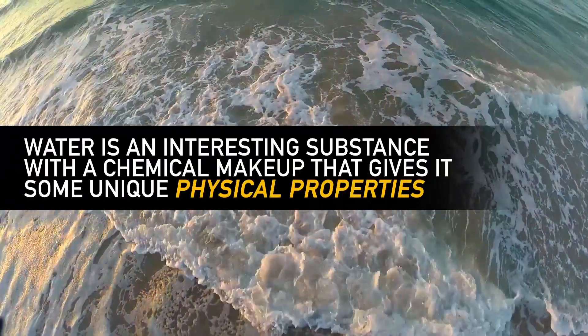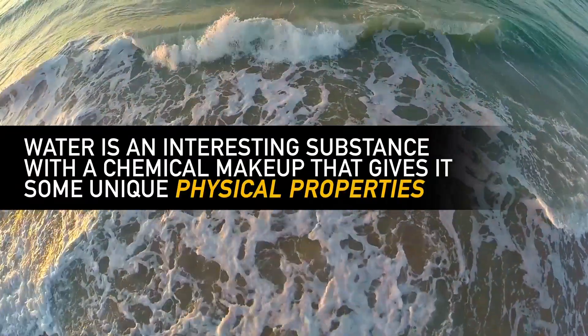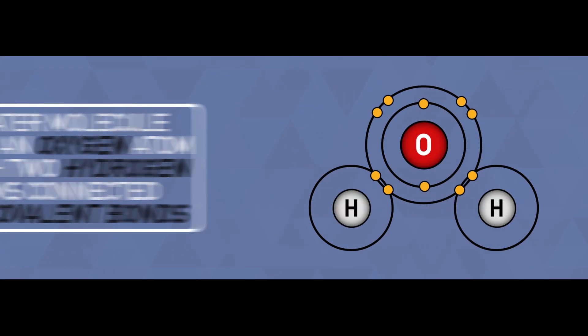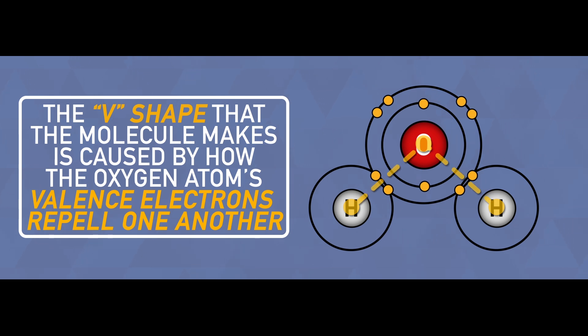Water is an interesting substance with a chemical makeup that gives it some unique physical properties. A water molecule has an oxygen atom with two hydrogen atoms connected to it by covalent bonds. The V-shape that the molecule makes is caused by the way that the oxygen atom's valence electrons repel one another.